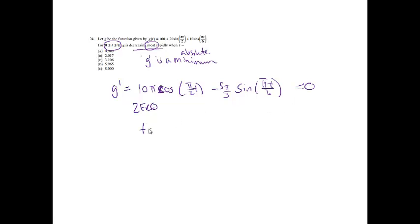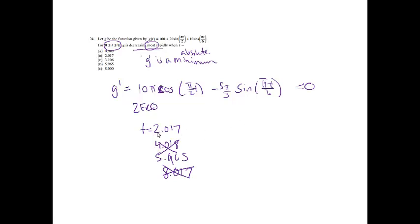Since 8.017 is outside the interval, it can't work. The choices included 2.017 and 5.965 but not 4.018. I want the zeros of G double prime that are critical values for G prime — so I need to correct myself: those zeros came from G double prime, and I plug them back into G prime to find which gives the minimum value.